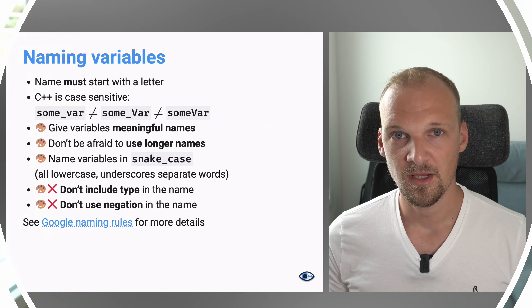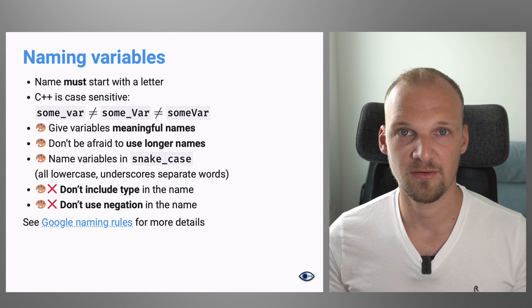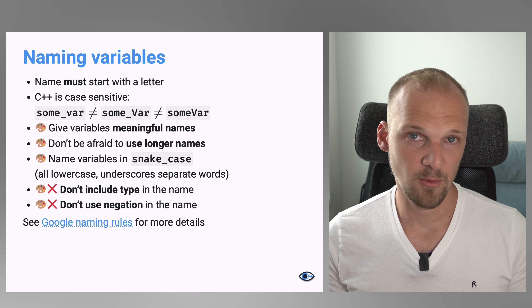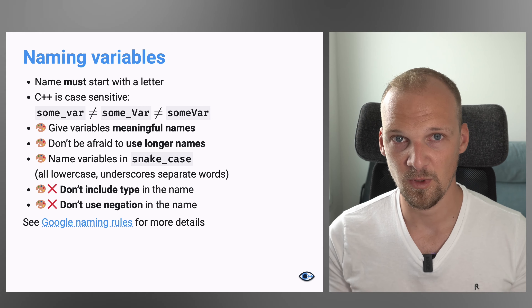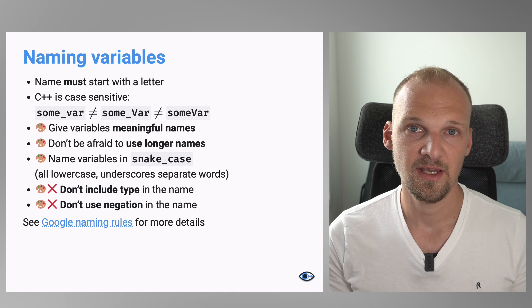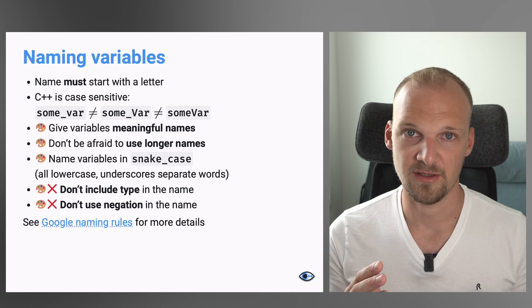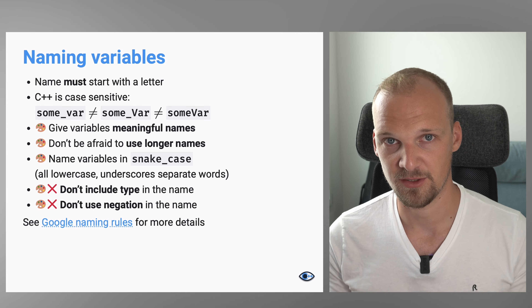If you're interested in knowing how to set up semantic autocompletion for C++, leave a comment below and we can talk about it in a separate video. On the note of naming variables, I suggest you follow a style guide. We will follow the Google style guide here, naming variables in snake case.